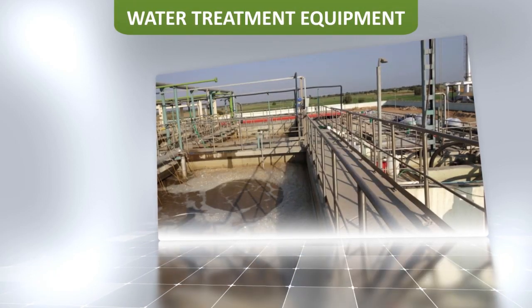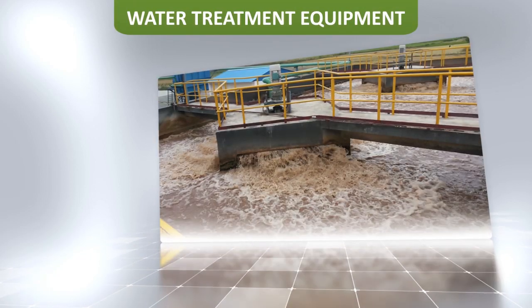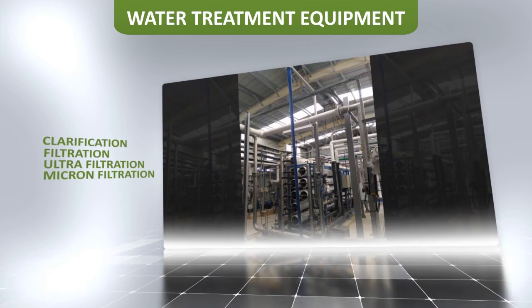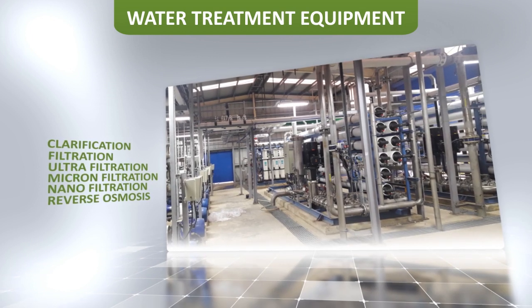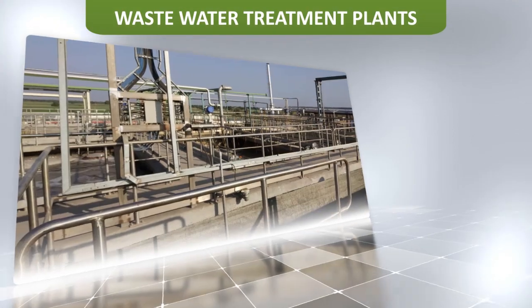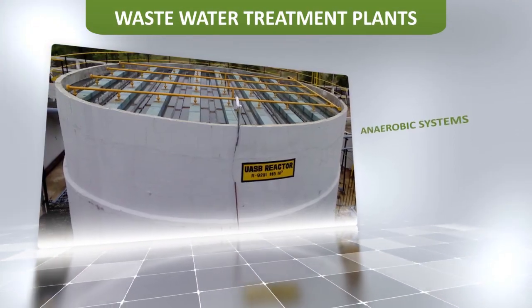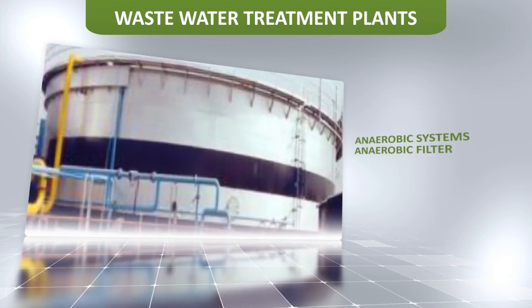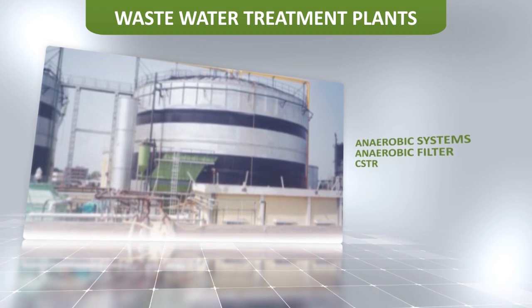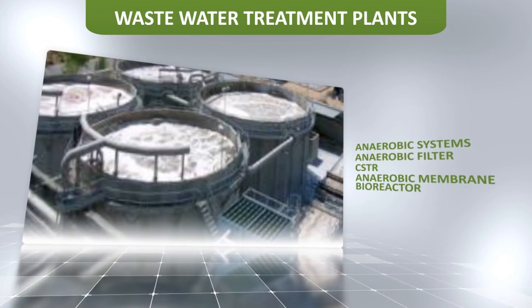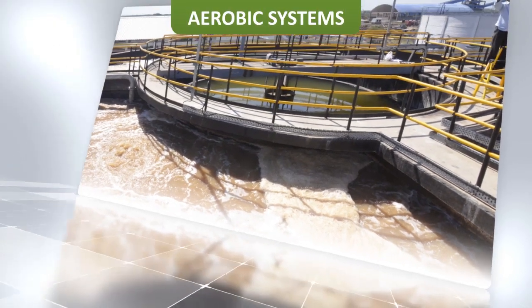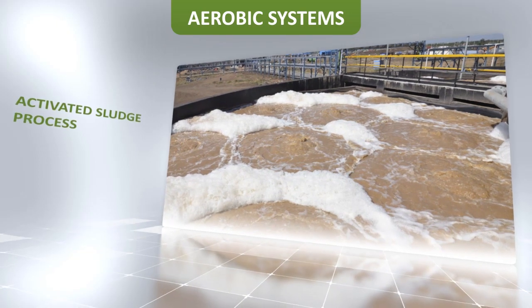Praj offers water treatment equipment namely clarification, filtration, ultrafiltration, micron filtration, nanofiltration, reverse osmosis, and seawater desalination plants. Wastewater treatment plants include anaerobic systems such as upflow anaerobic sludge blanket (UASB), anaerobic filter, continuous stirred tank reactor (CSTR), and anaerobic membrane bioreactor. Aerobic systems include activated sludge process and extended aeration.